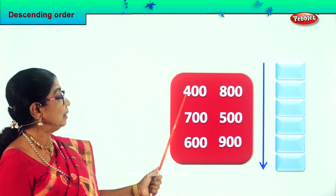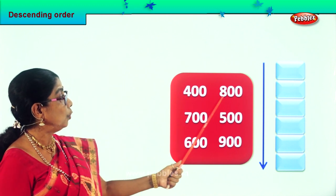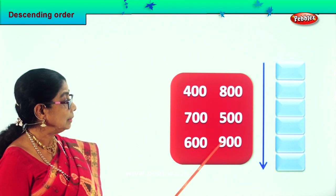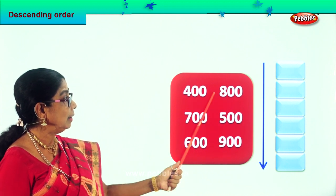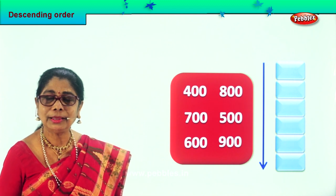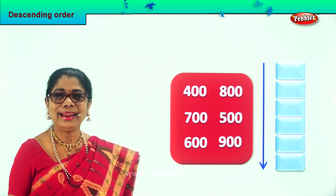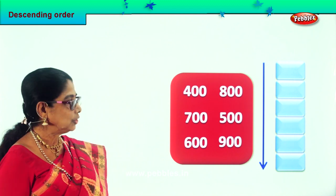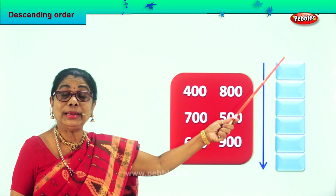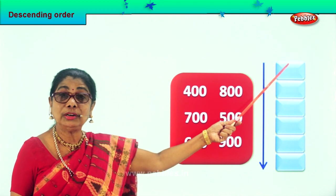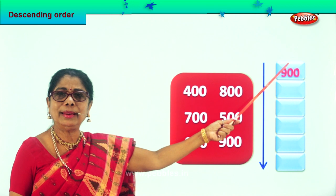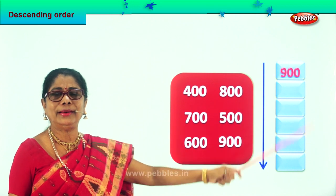Six, seven, nine, four, eight, five — there is nine hundred, eight hundred. Which is the biggest number? Good. Nine hundred. So we identified the biggest number. We are doing descending order, so we put it right on the top. Nine hundred.